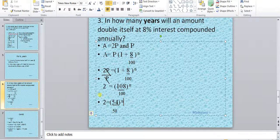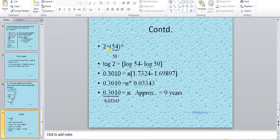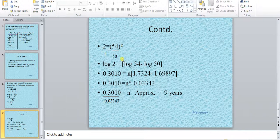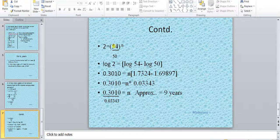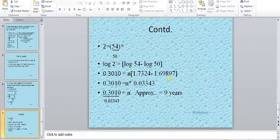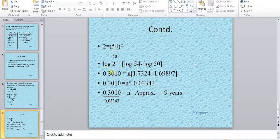How to solve this? We take log on the left hand side and on the right hand side. When we take log, because it is in division, log a minus log b is the rule. Log a means log 54 and log b means minus log 50.